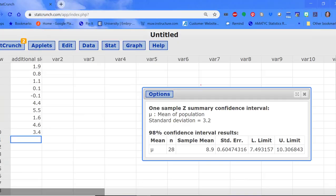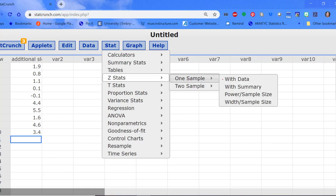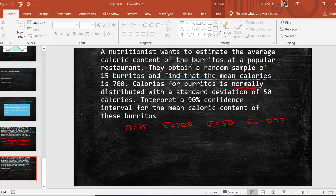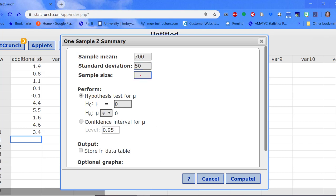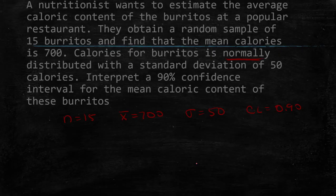Let's go back to StatCrunch. We'll go back to the beginning. Stat, Z stats, one sample with summary. So again, our sample mean 700. Standard deviation is 50. Sample size is 15. And we're going to choose that confidence level. And our confidence level is 0.9. Click compute. And we get 678.7650 and 721.2350.